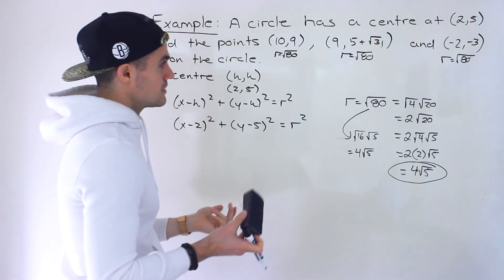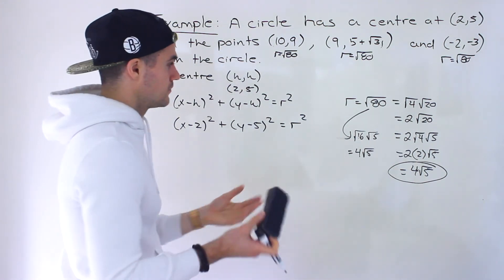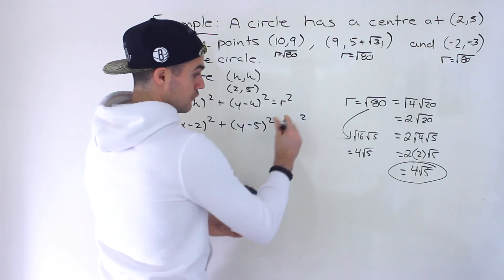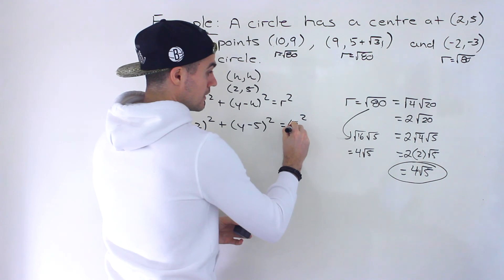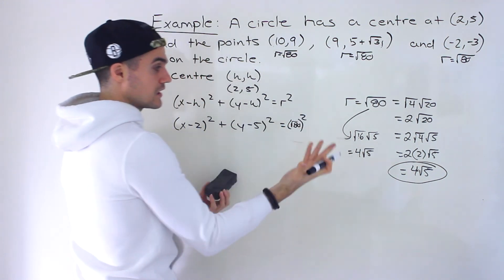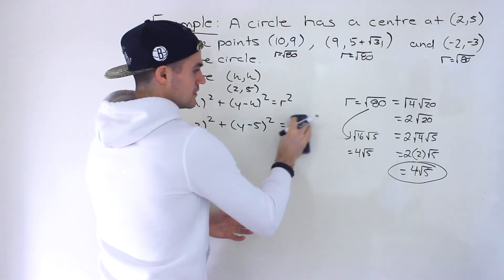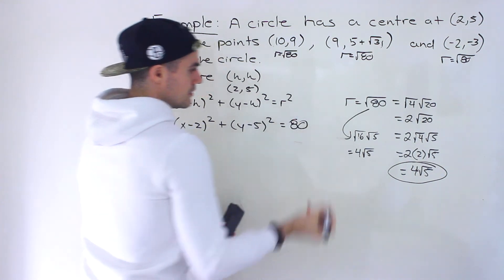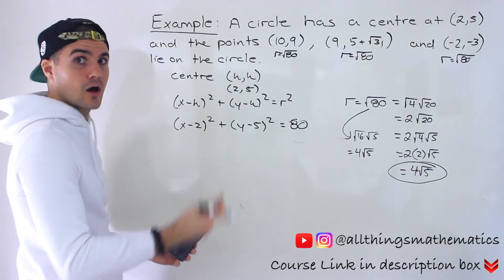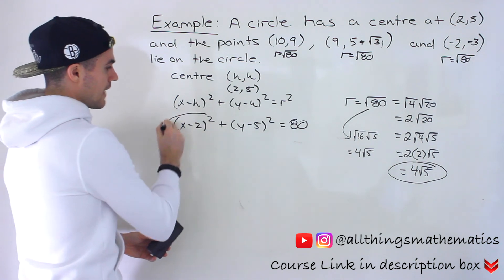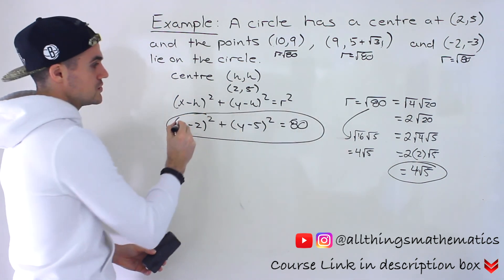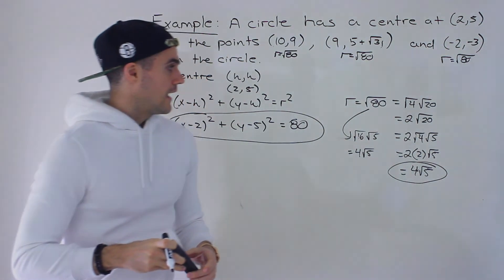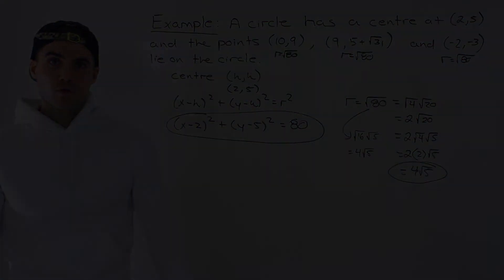Finally part C: the equation of the circle. We simply plug r = √80 into our equation, and since (√80)² = 80, the equation is (x − 2)² + (y − 5)² = 80. That's the equation of the circle centered at (2, 5), and that's it for the question.